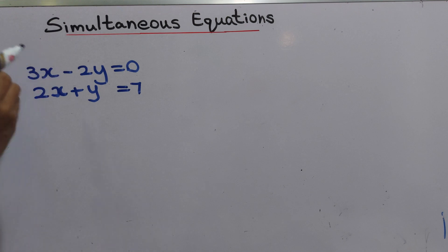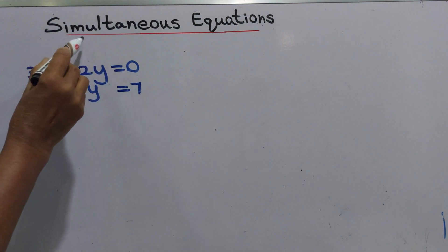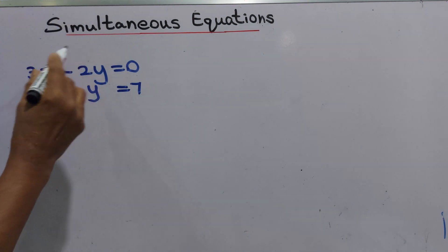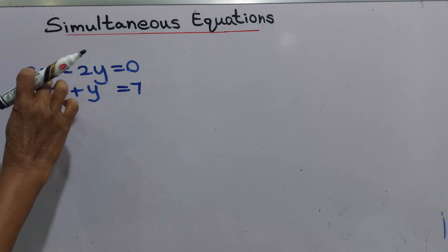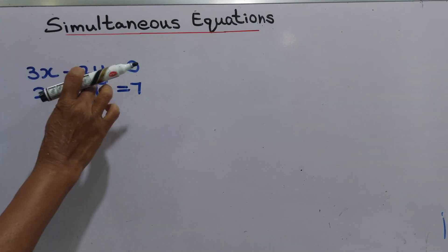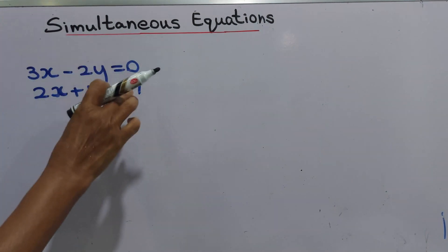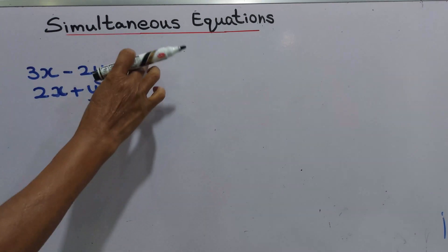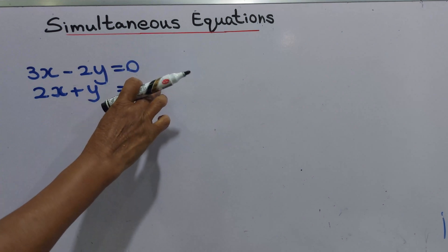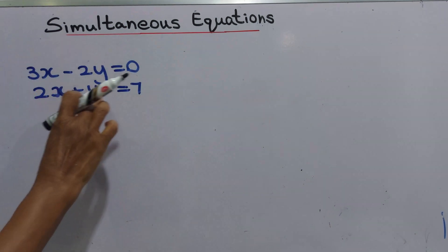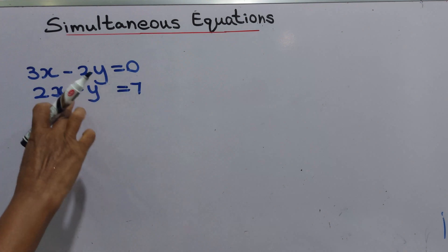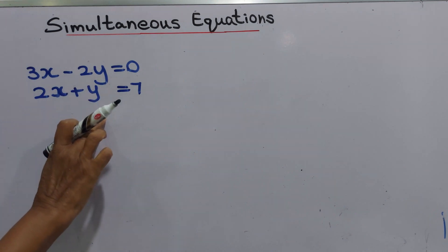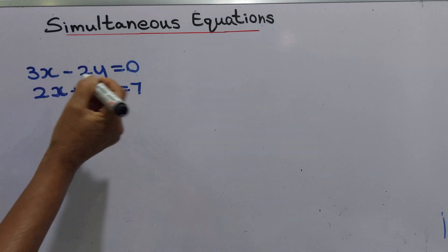Today we are going to learn about simultaneous equations to find the value of two unknowns, x and y. These two are unknowns in a problem. Two different equations must be given — two different equations that relate the unknowns to each other. These equations are called simultaneous equations.